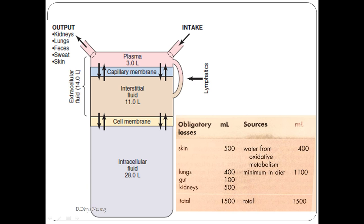Under normal circumstances, amounts of water taken in and lost from the body are equal over time. Water is obtained from the diet and oxidative metabolism. From oxidative metabolism: 1 gram carbohydrate produces 0.6 ml water, 1 gram protein releases 0.4 ml water, and 1 gram fat generates 1.1 ml water. An intake of about 1000 kilocalories produces 125 ml of water. Water is lost through the kidneys, skin, lungs, gut, and sweat.